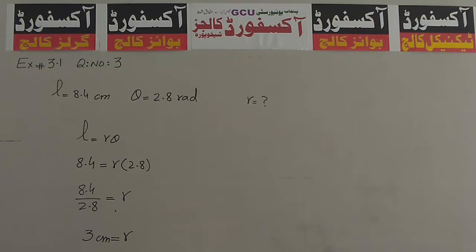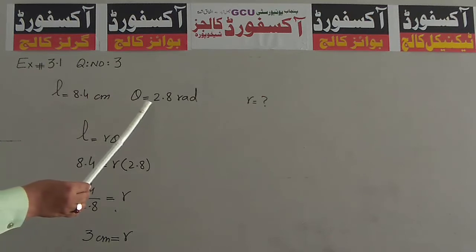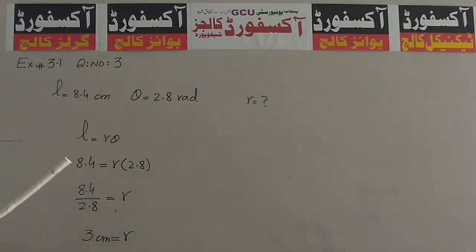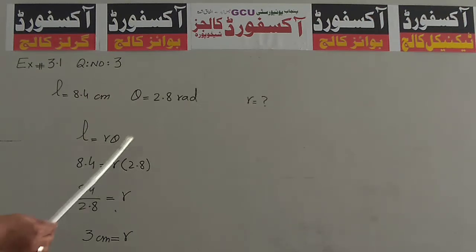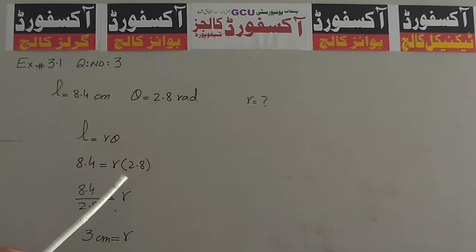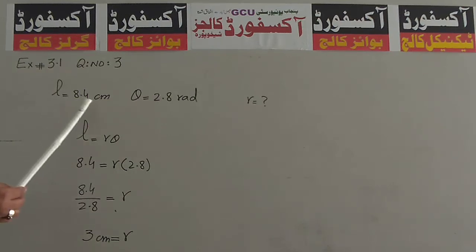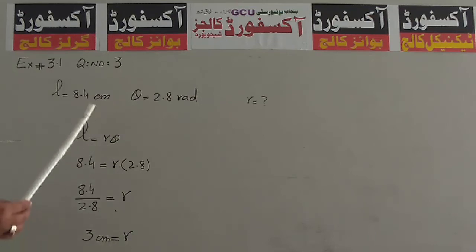Dear student, अब हम Question No.3 discuss करेंगे. Question No.3: find the missing element L or theta. पहला part: L = 8.4 cm, θ = 2.8 Radian. Formula: L = Rθ. 8.4 = R × 2.8, तो R = 8.4 / 2.8 = 3 cm. L के साथ cm है तो R के साथ भी cm लिखेंगे.